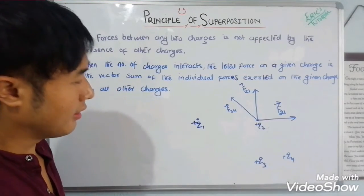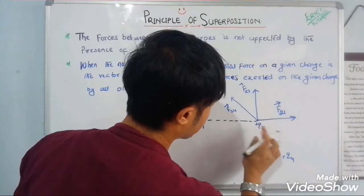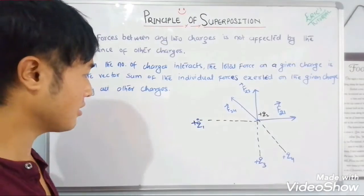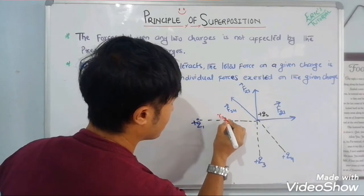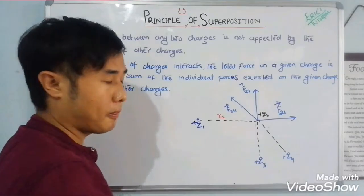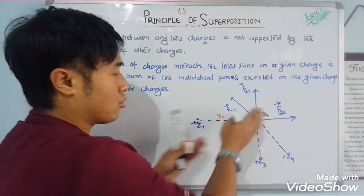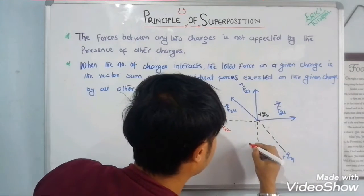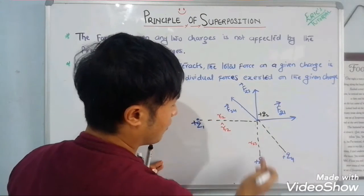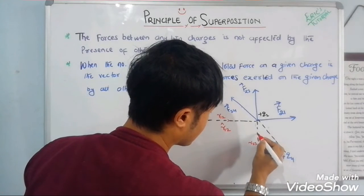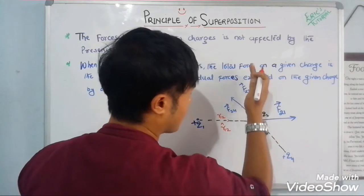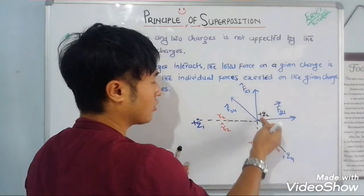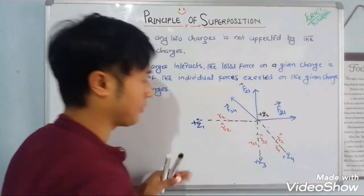To understand better: the distance between charges is denoted by r. The distance between q1 and q2 is r₁₂. The force is exerted from charge 1 to charge 2, so the direction of the force is given by the unit vector r̂₁₂ (from 1 to 2). Similarly, the distance between q2 and q3 is r₂₃, and the direction of force from q3 on q2 is r̂₃₂. The distance between q2 and q4 is r₂₄, and the force direction is r̂₄₂.